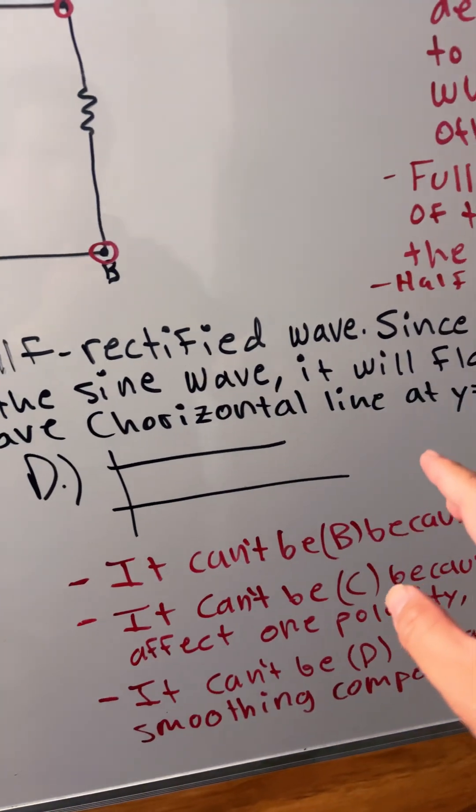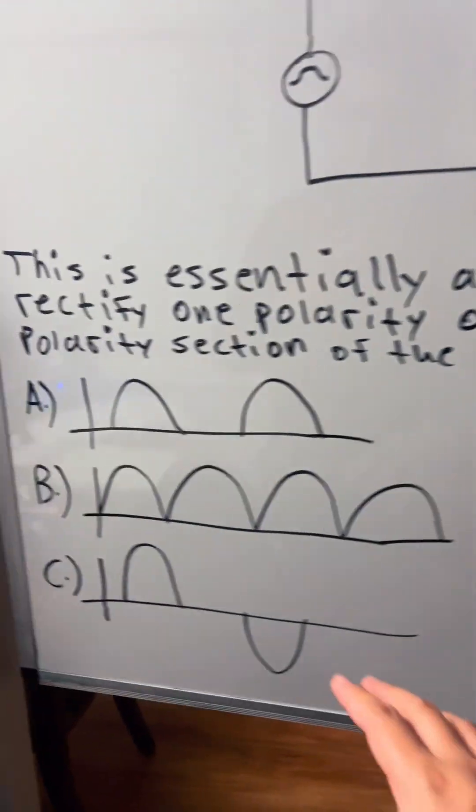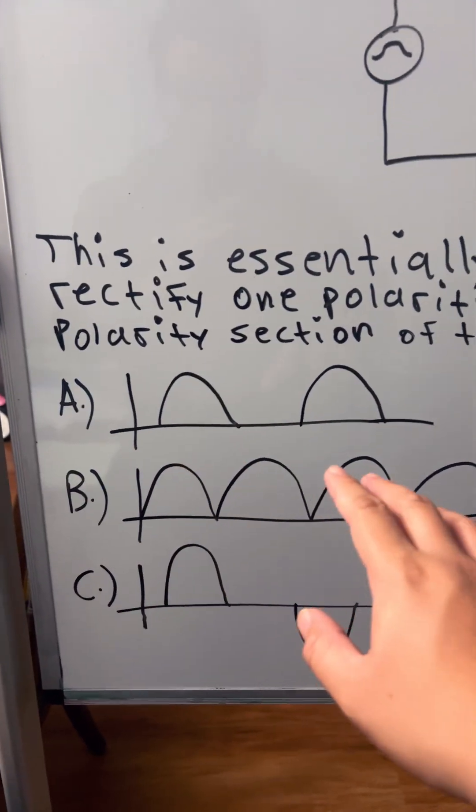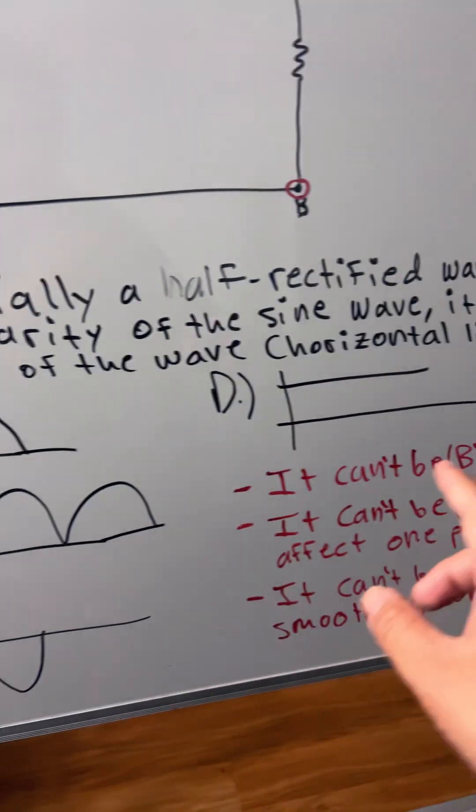Horizontal line, Y equals zero. So we have A, B, C, and D.